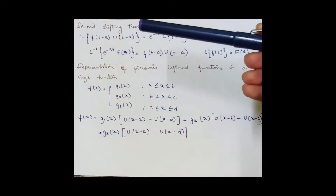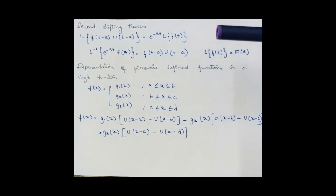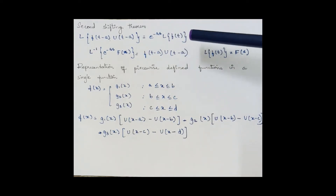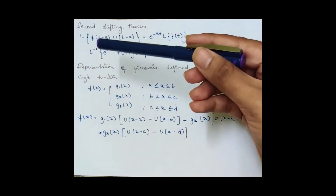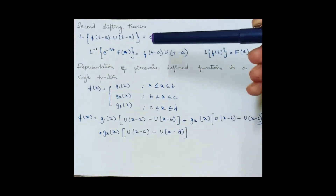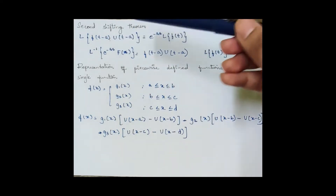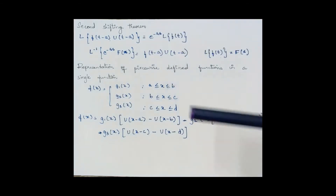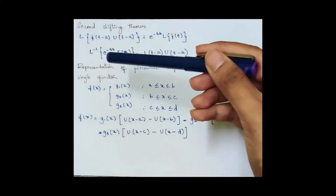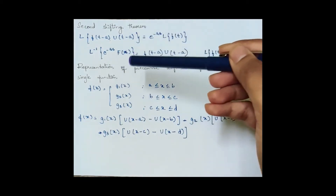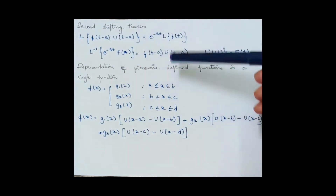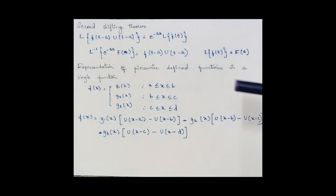Now let's learn the second shifting theorem. The Laplace transform of f(t − a) · u(t − a) equals e^(−as) times the Laplace transform of f(t). The shift value a appears outside as e^(−as). Similarly, the inverse Laplace transform of e^(−as) · F(s) equals f(t − a) · u(t − a).